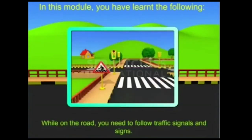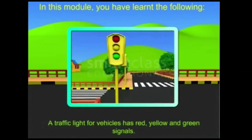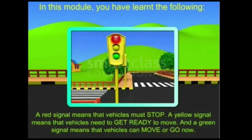In this module you have learned the following: while on the road you need to follow traffic signals and signs. A traffic light for vehicles has red, yellow and green signals. A red signal means that vehicles must stop, a yellow signal means that vehicles need to get ready to move, and a green signal means that vehicles can move or go now.